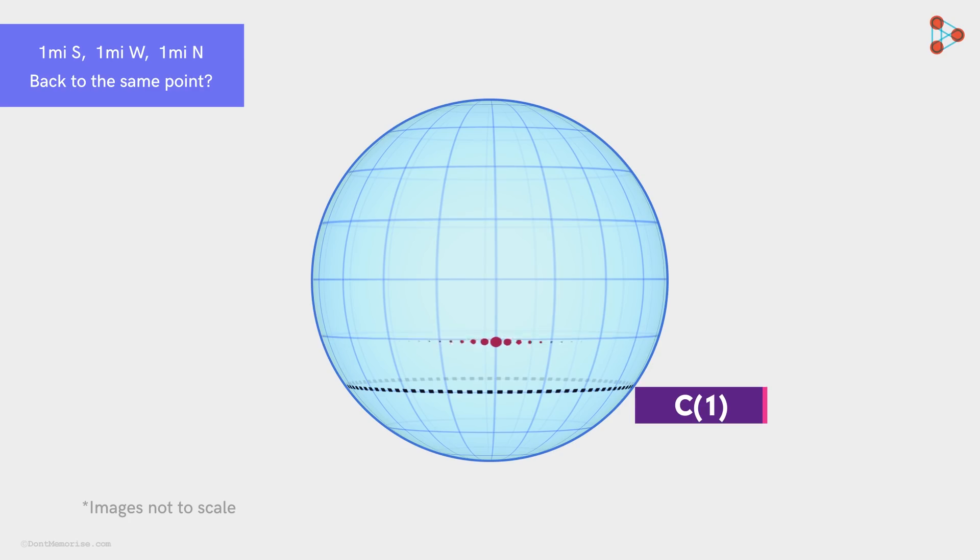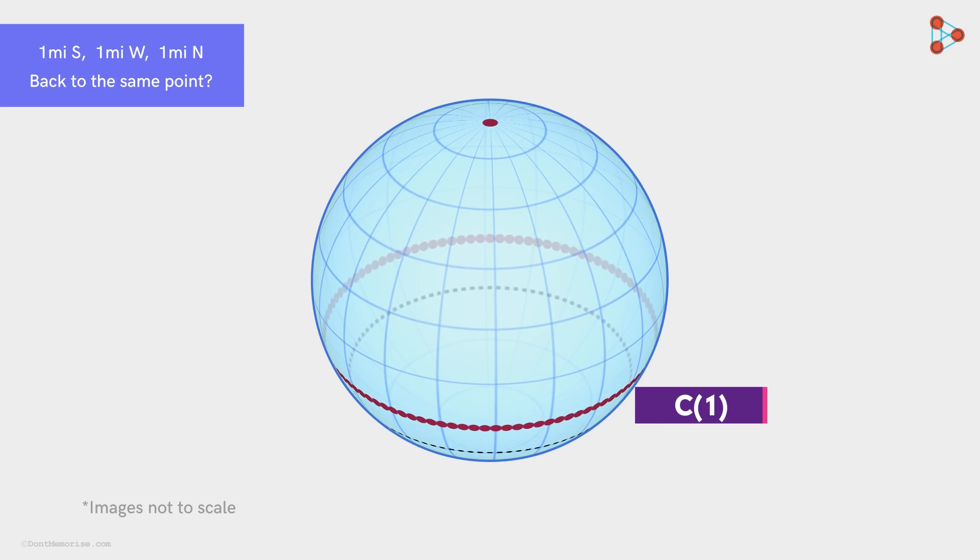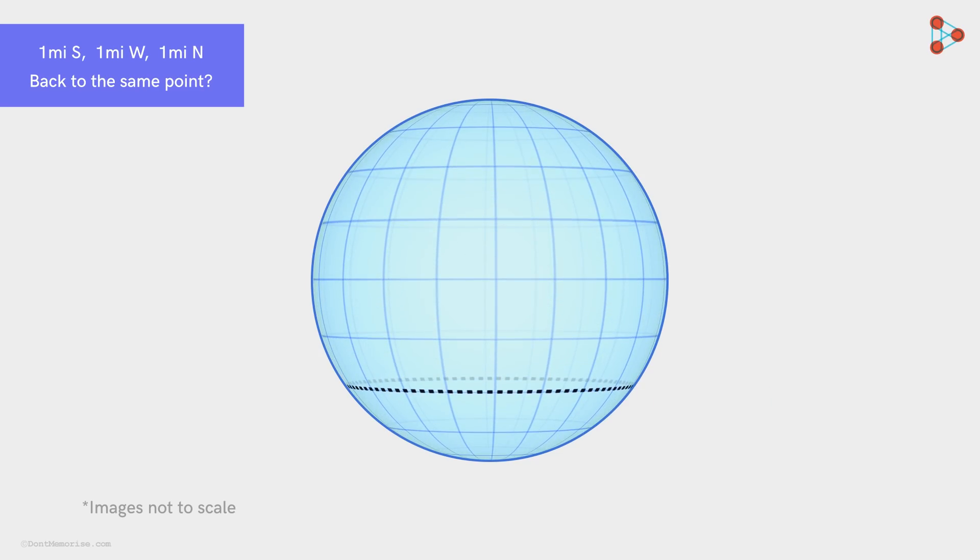Doesn't matter which point we take and traverse the directions mentioned, we will reach back at the same point. Is that it? All points on this circle and the north pole are the solutions to this riddle? Can we find even more solutions?